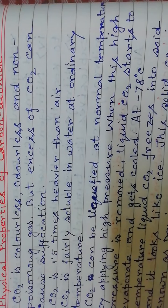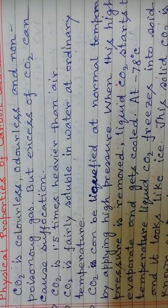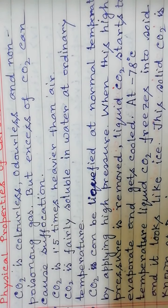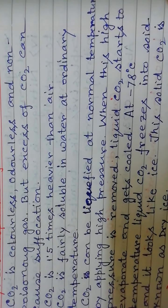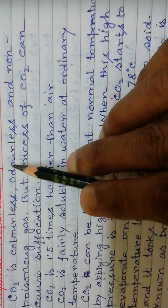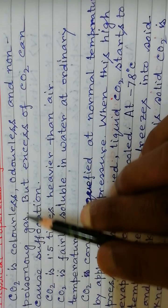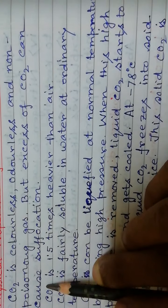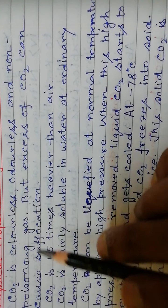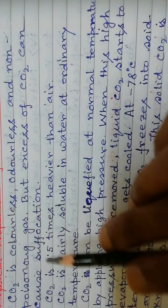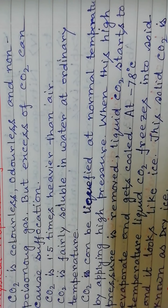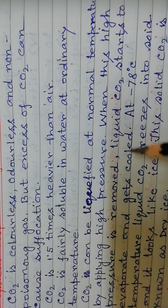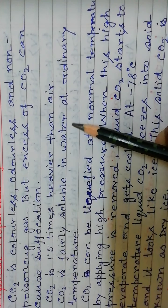Now, what are the properties of carbon dioxide? First, the physical properties. Carbon dioxide is a colorless, odorless, and non-poisonous gas. However, an excess amount of carbon dioxide can cause suffocation. Carbon dioxide is 1.5 times heavier than air, which is why it is collected by upward displacement of air.